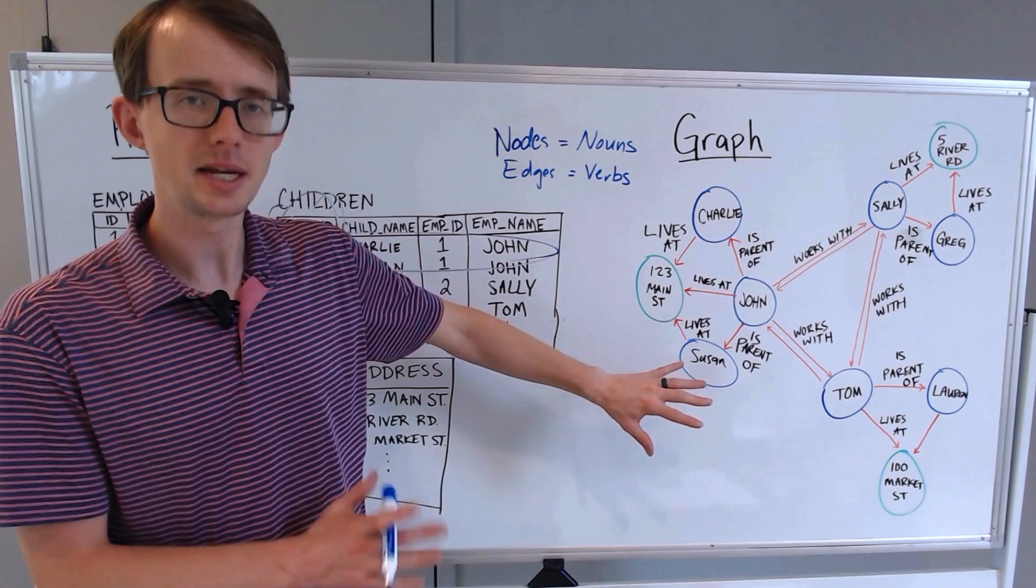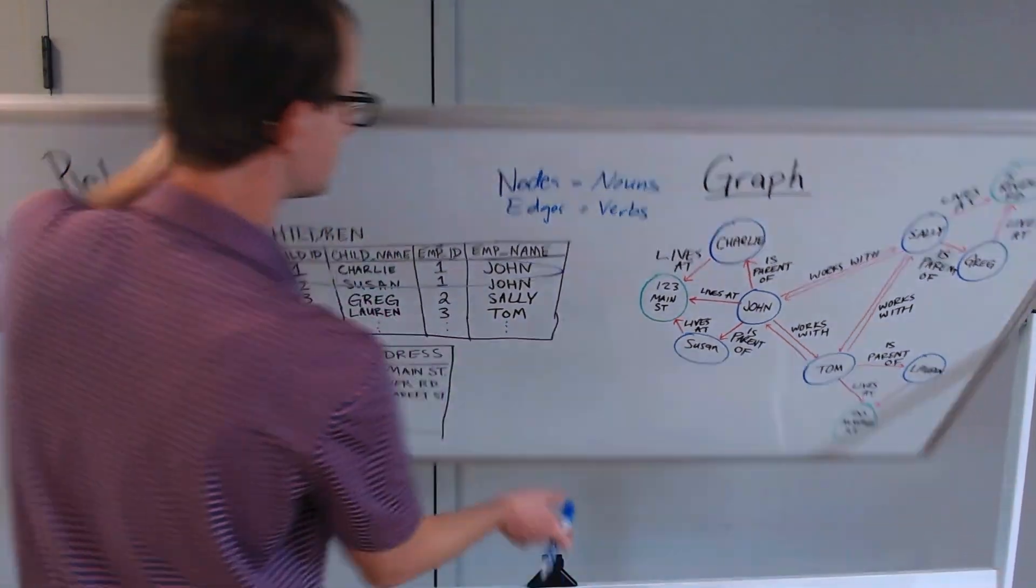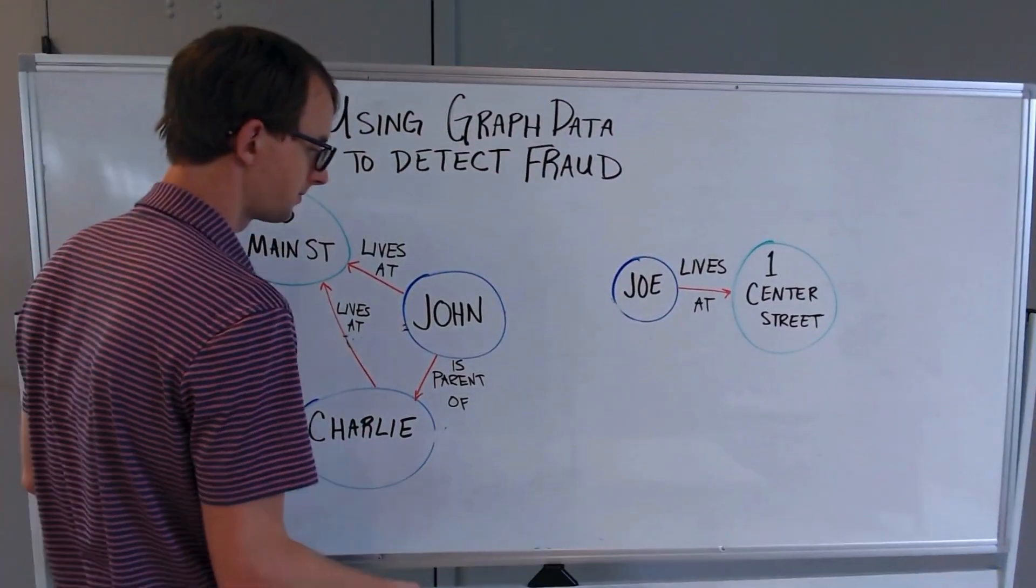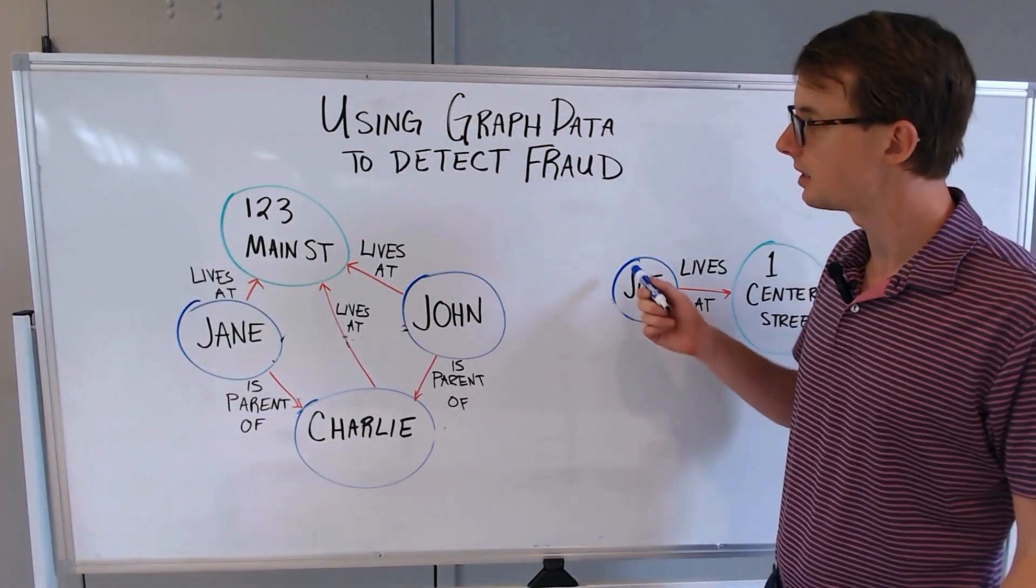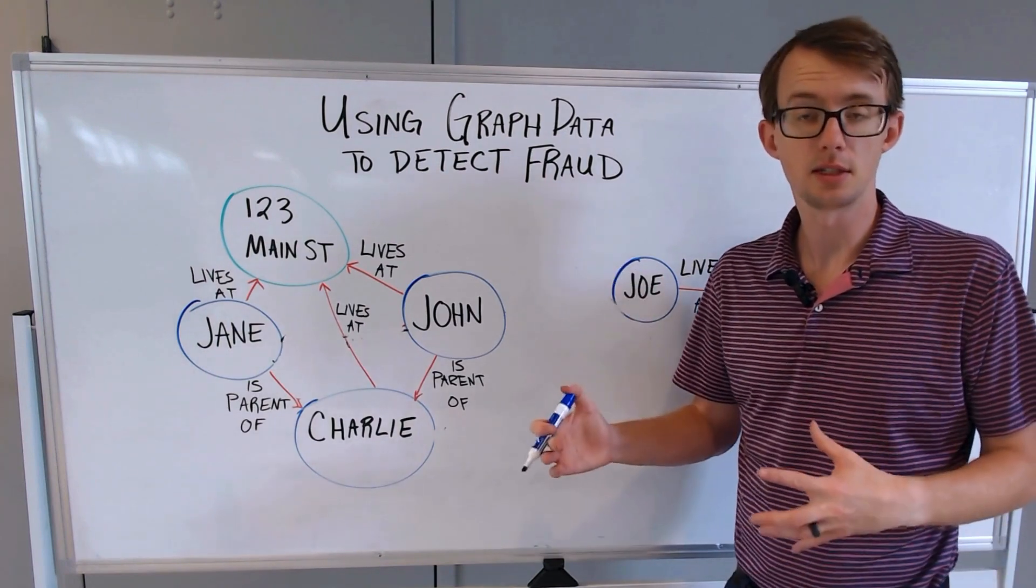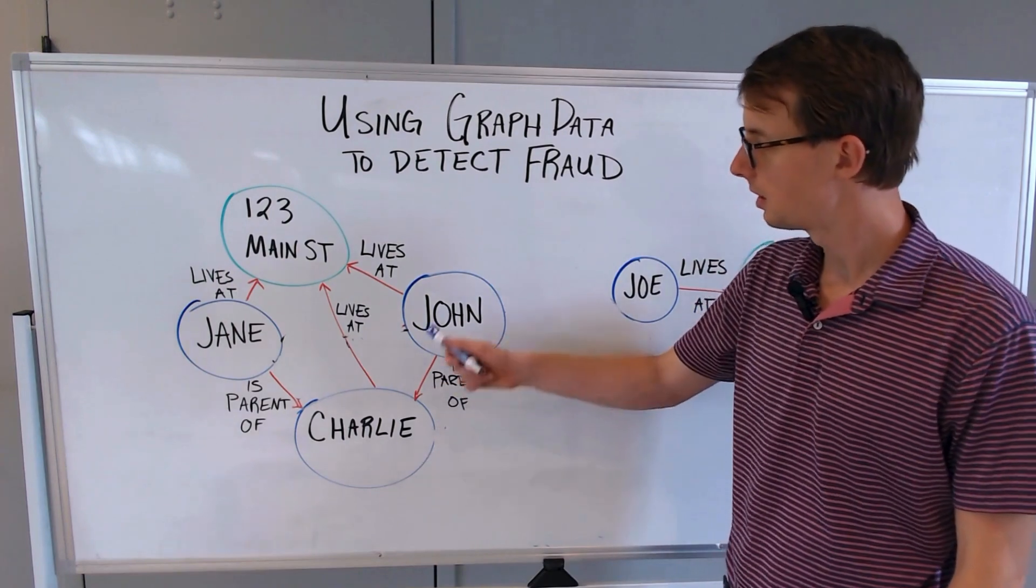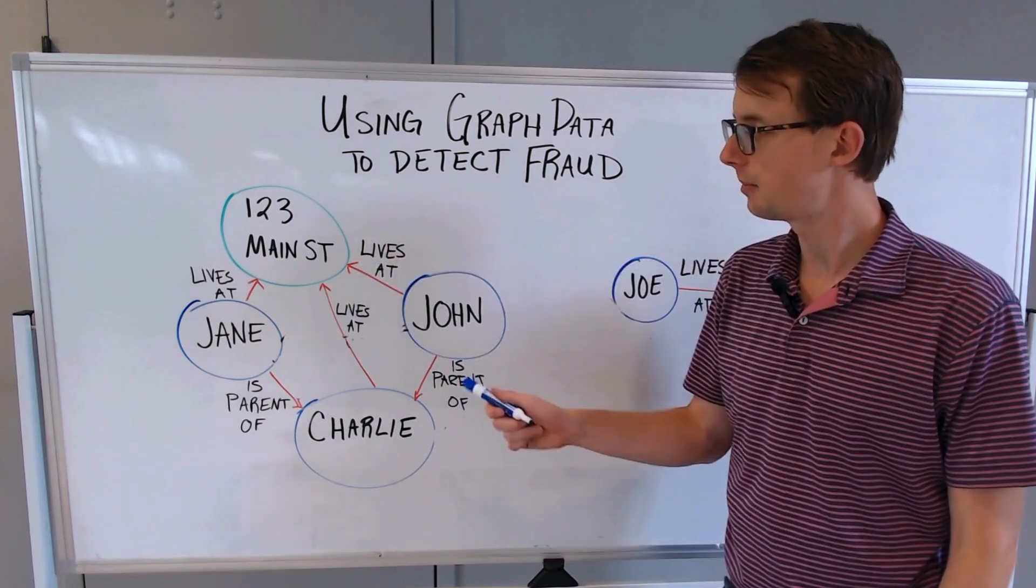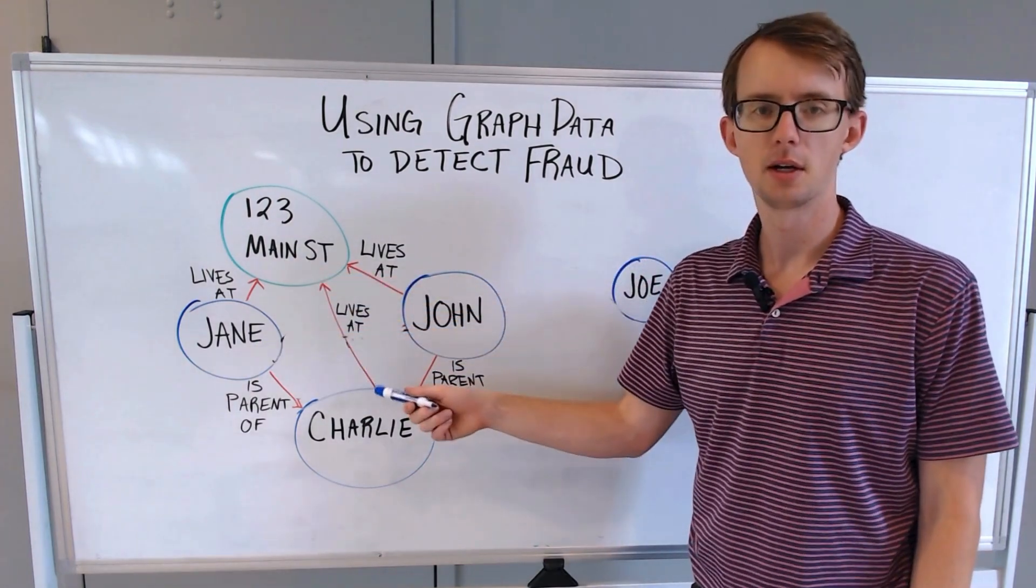Now that we have a basic understanding of what a graph is, let's return to our earlier example right over here. I've just done a subset of this data so that we can more easily see how these entities are related. Here's John, who's the parent of Charlie. John lives at 123 Main Street. Also, Jane is someone that lives at 123 Main Street and is the parent of Charlie.